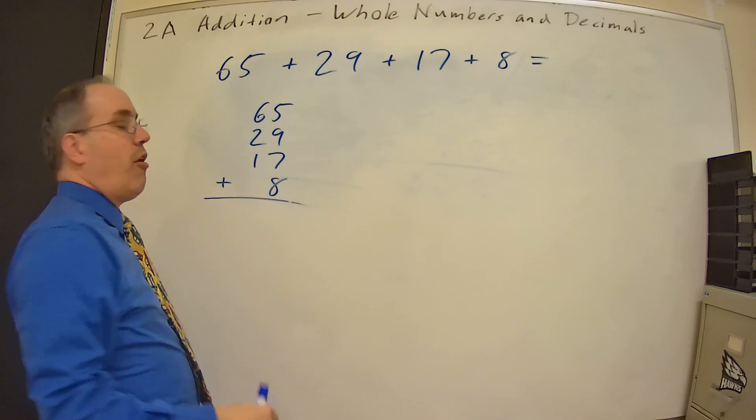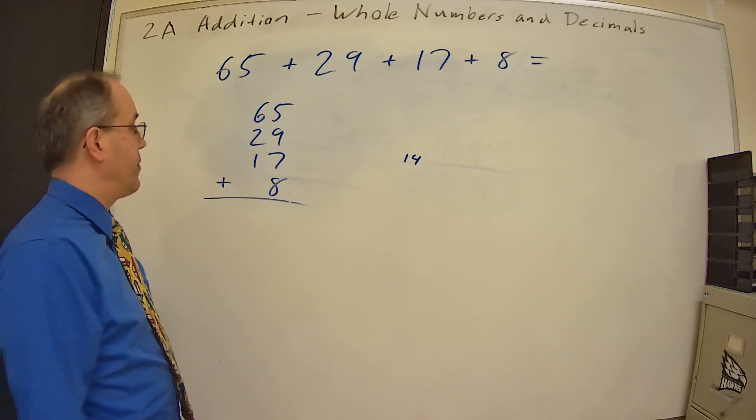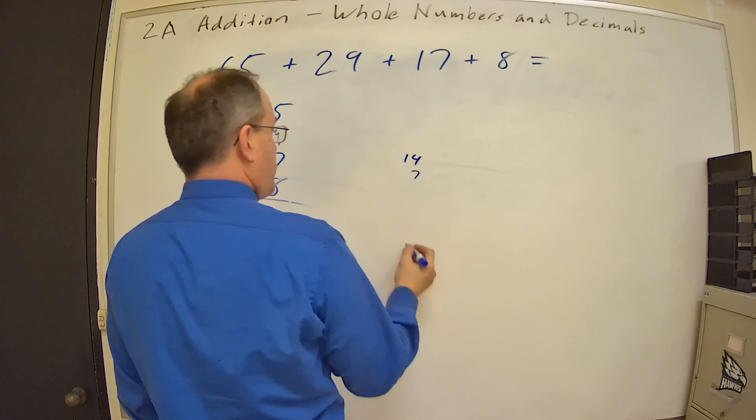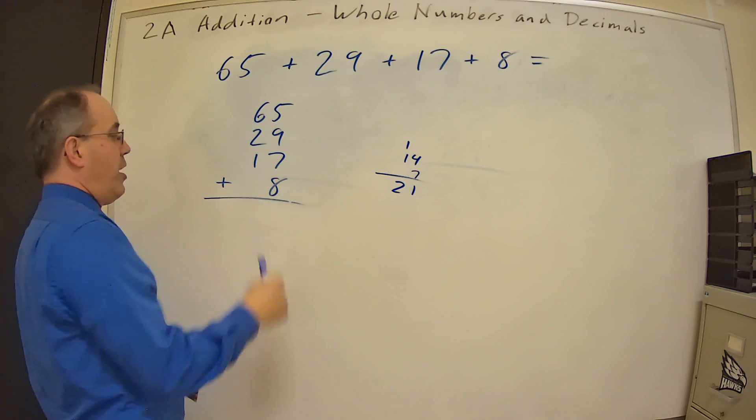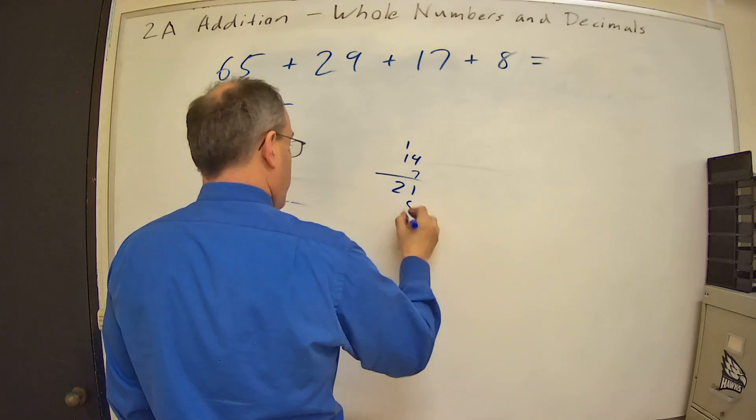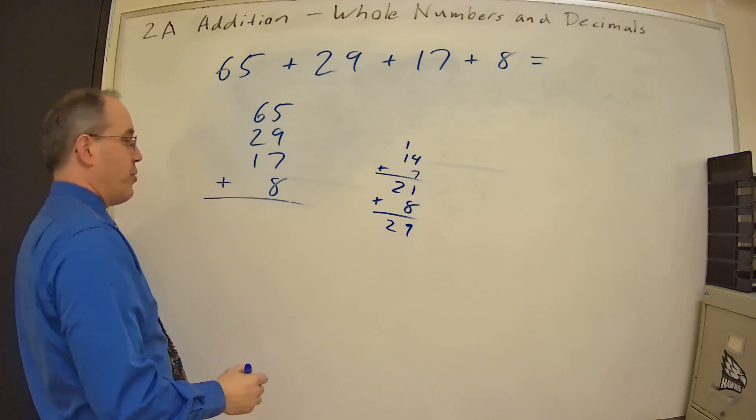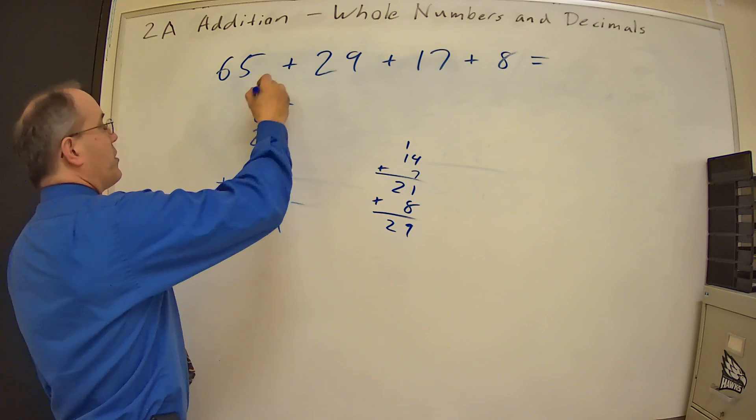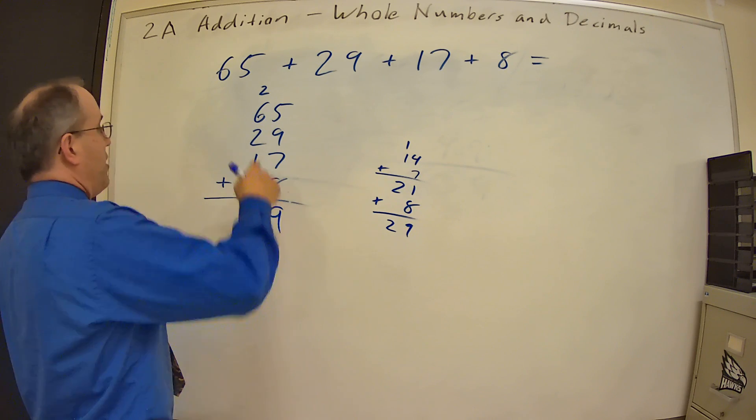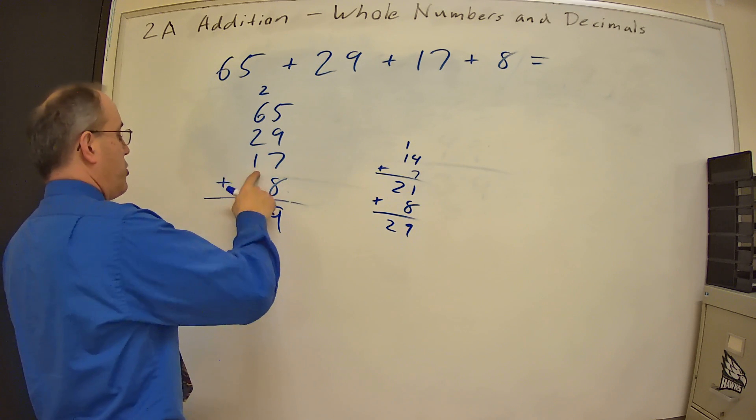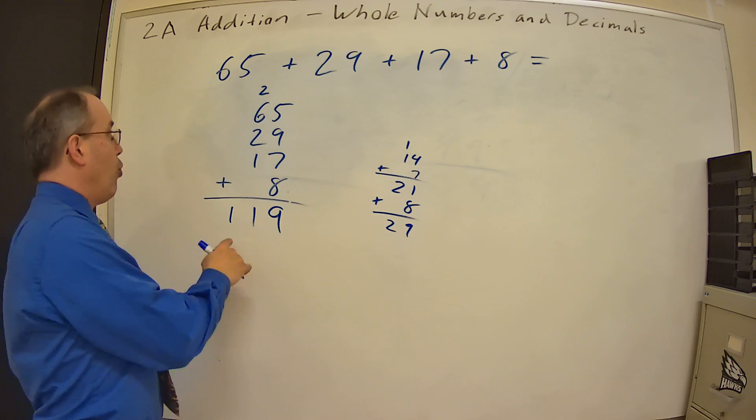So 5 plus 9 is 14. And if you need to put something off to the side, you can say, okay, so that was 14. 14 plus 7. So if you need to come over here and say, okay, 7, well, 4 plus 7 is 11 carry the 1. 1 plus 1 is 2. Okay, so now we've got 21. 21 plus 8, right? 21 plus 8. 1 plus 8 is 9. 2, 2. So we have 29. So we're going to put the 9 here and we're going to carry the 2. Now that we've carried the 2. 2 plus 6 is 8. 8 plus 2 is 10. 10 plus 1 is 11. And so 65 plus 29 plus 17 plus 8 is equal to 119.